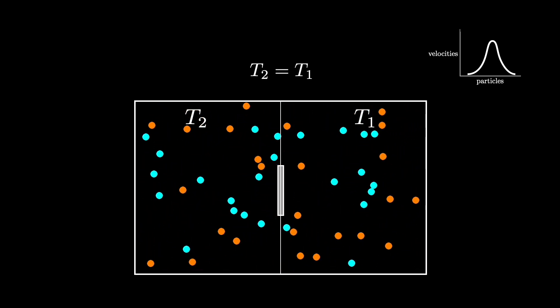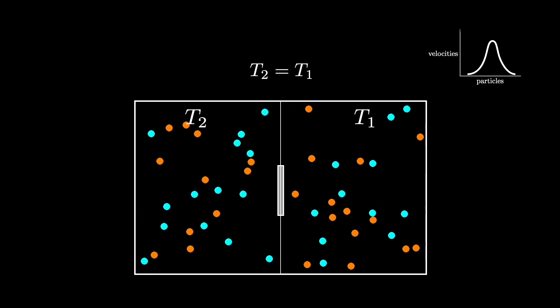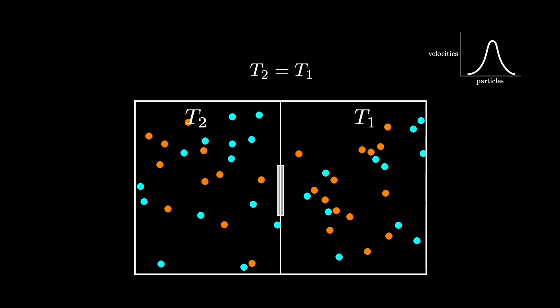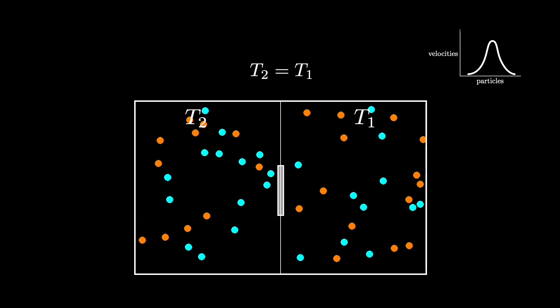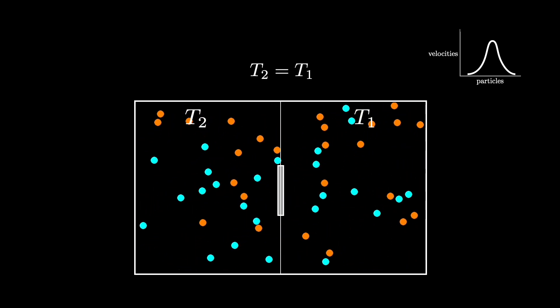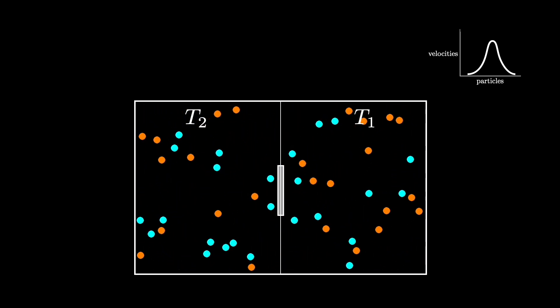The partition also contains a small frictionless door that will only allow one molecule to pass through when opened. Finally, we ensure that the whole system is entirely isolated from its surroundings so it must be at its maximum entropy.